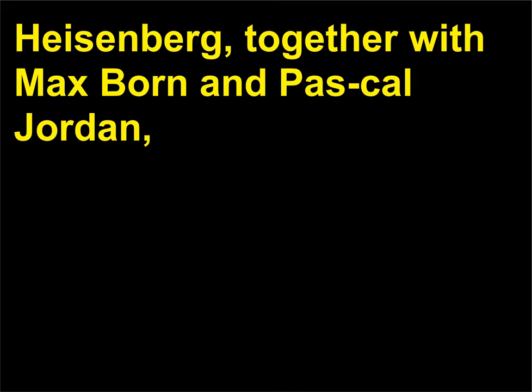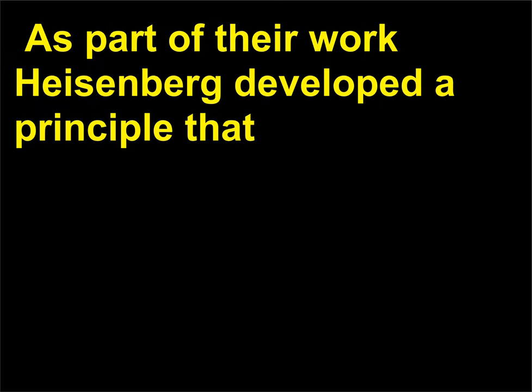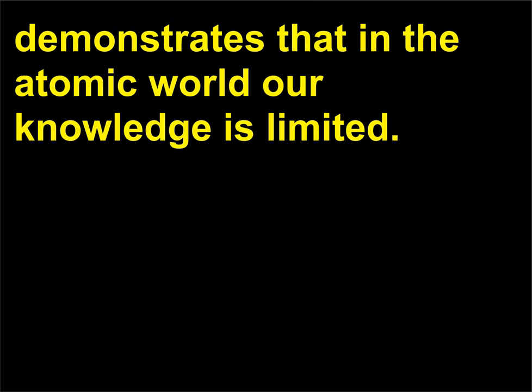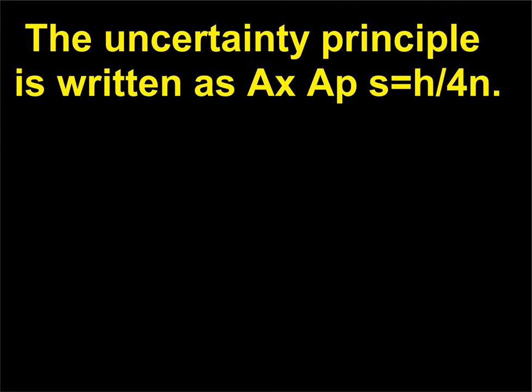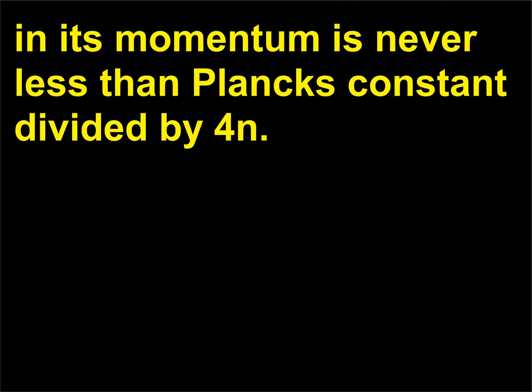Heisenberg, together with Max Born and Pascual Jordan, tried a totally different approach using mathematical matrices. As part of their work Heisenberg developed a principle that demonstrates that in the atomic world our knowledge is limited. The uncertainty principle is written as Δx·Δp ≥ h/4π. In words: the uncertainty of a particle's position times the uncertainty in its momentum is never less than Planck's constant divided by 4π.